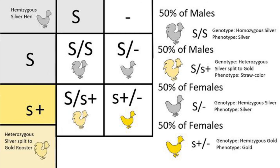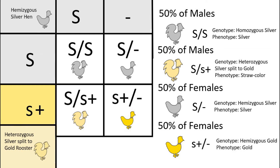The fifth pairing is a lot more complex: a heterozygous silver split to gold male bred to a silver female. Because the dad in this pairing has one silver allele and one gold allele, 50% of his daughters will be silver and 50% of the daughters will be gold. Remember, the mom in this pairing has no effect on the silver or gold alleles of their daughters. For the male offspring, 50% of them will be silver — by getting one silver allele from their dad and one from their mom — and 50% of them will be silver split to gold, with a gold allele from their dad and a silver allele from their mom.